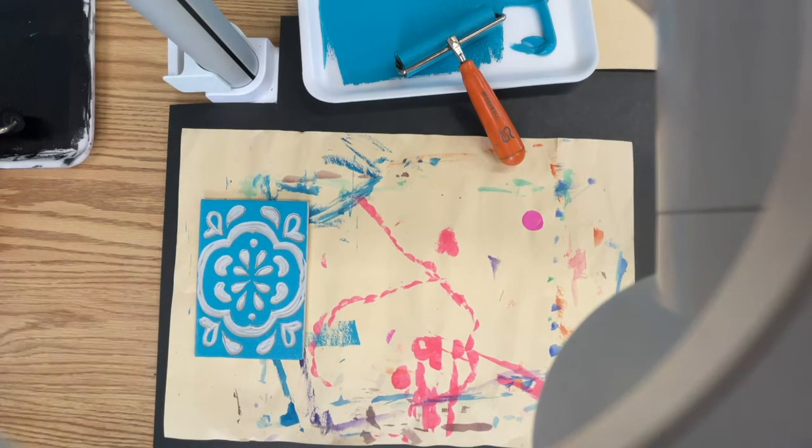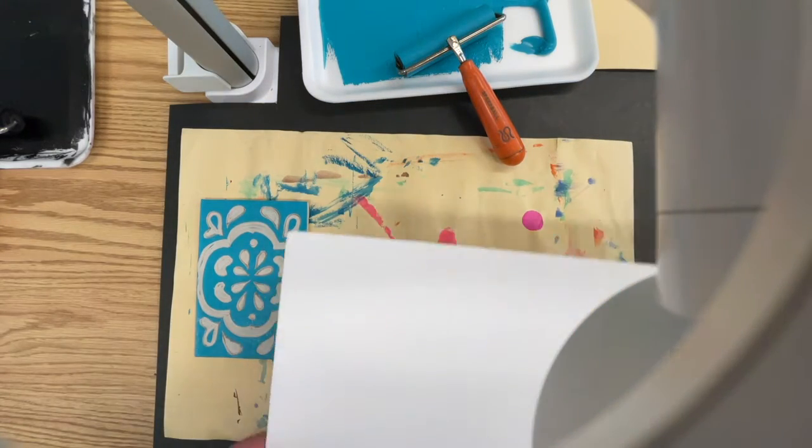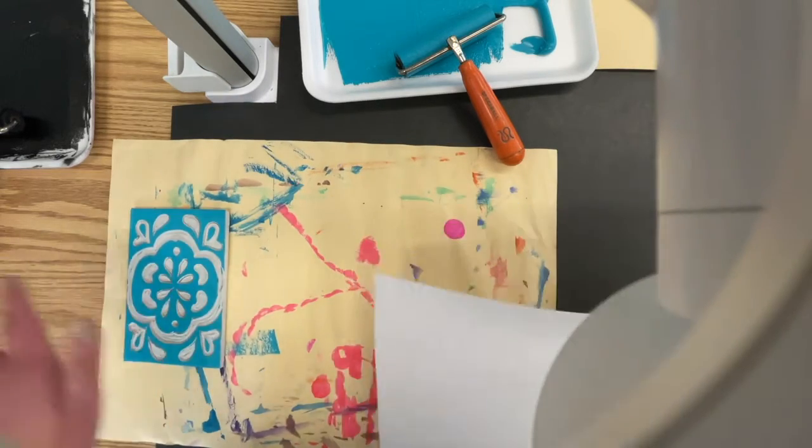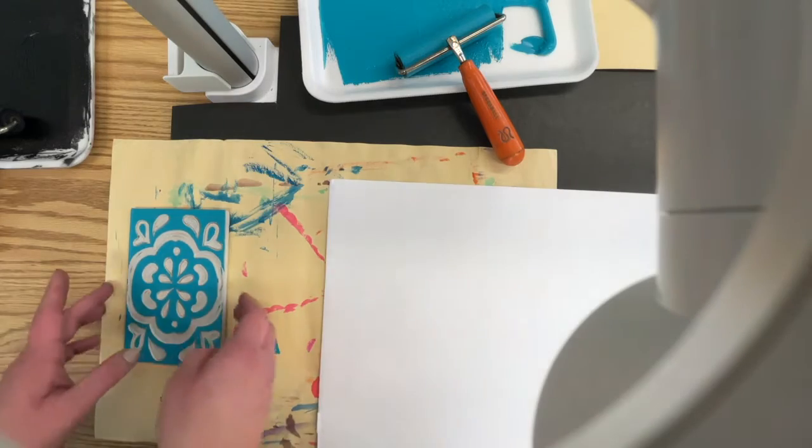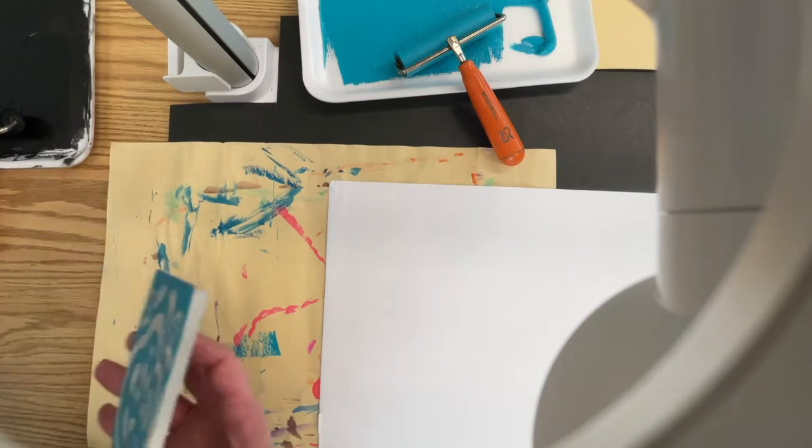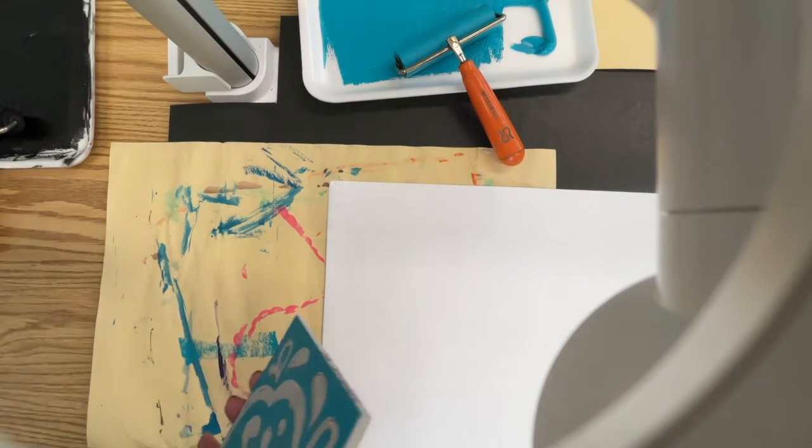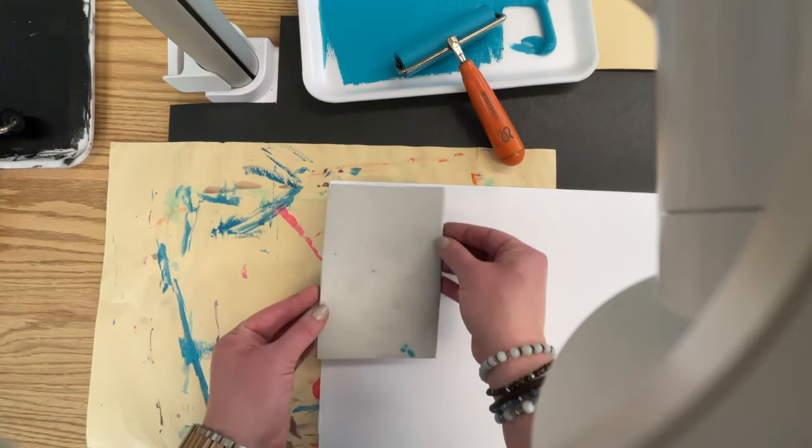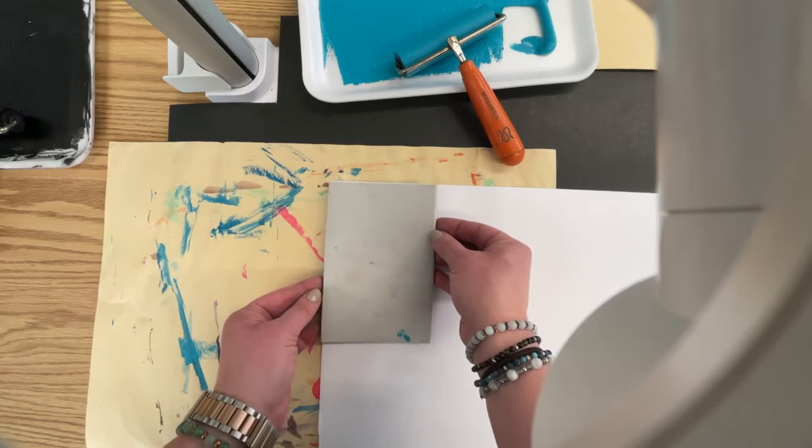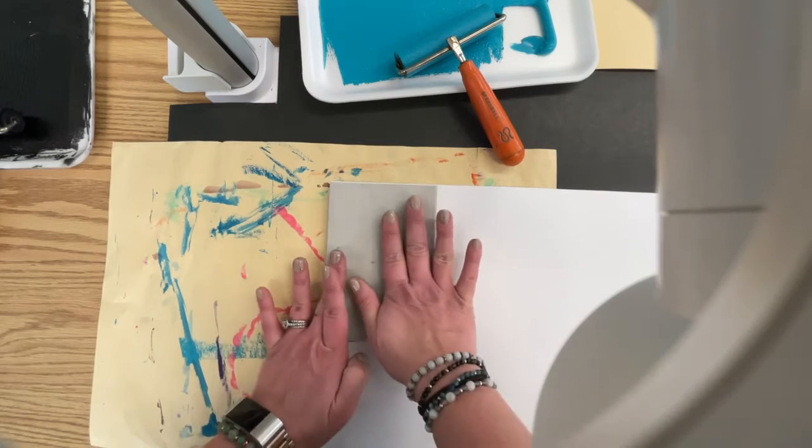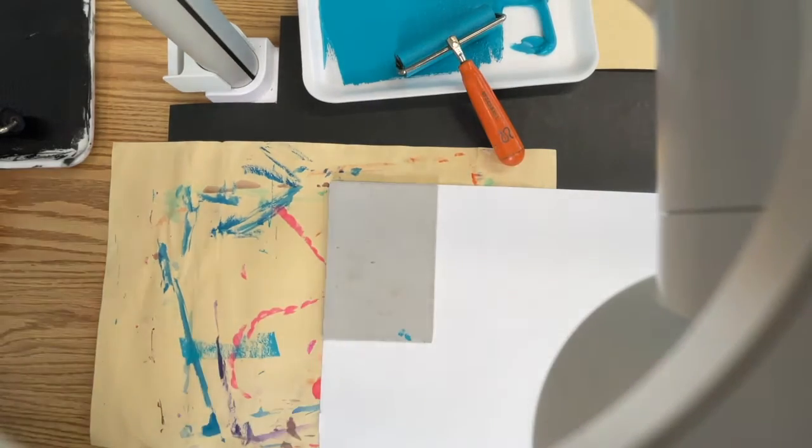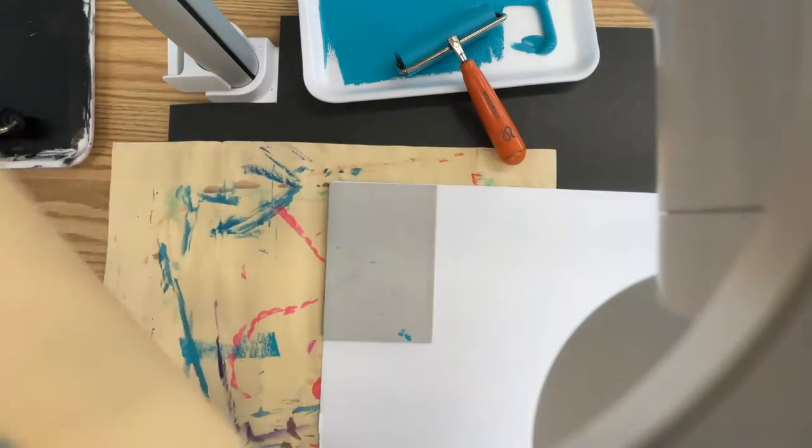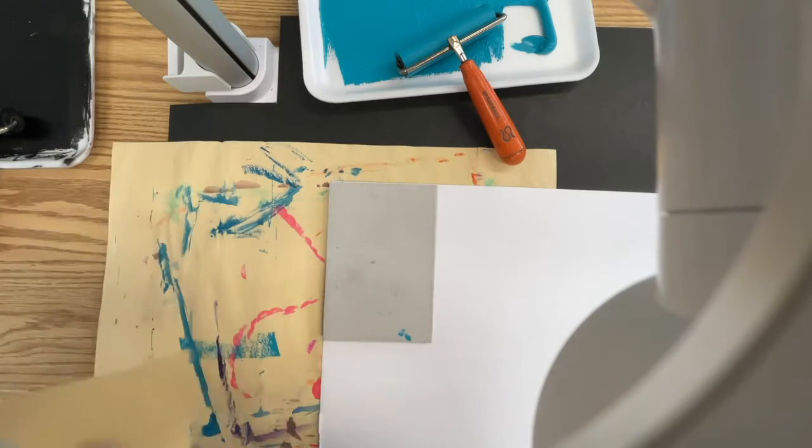I'm going to set my brayer down, handle out. I'm going to take my paper, keeping it out of my ink area. Your very first print has to be in a corner, or else the rest of your pattern won't be lined up. I'm going to stick it right in the corner.